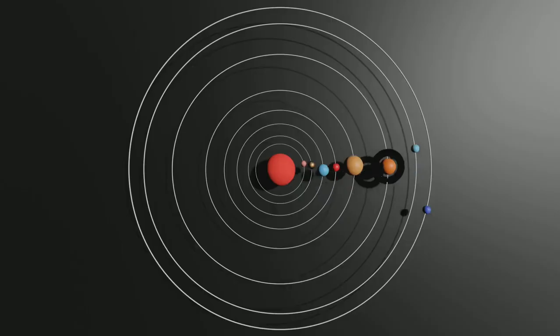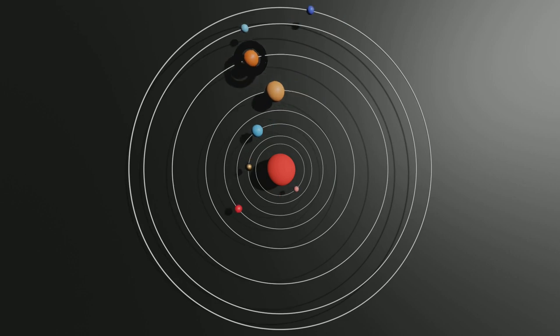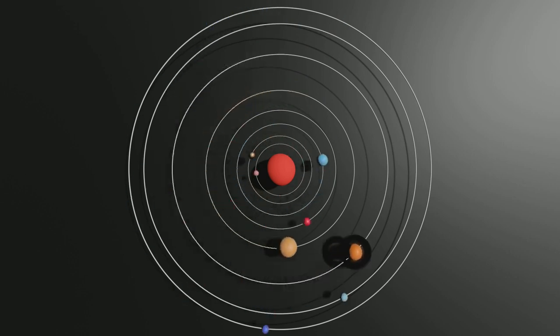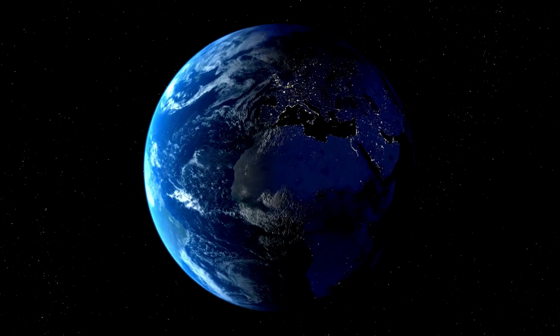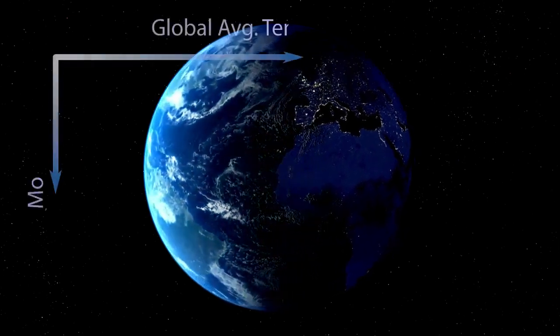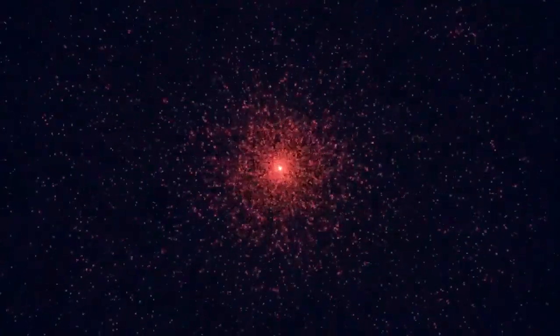This could lead to extreme temperature differences between the two hemispheres. Proxima Centauri is a red dwarf star, smaller and cooler than our sun, and it emits powerful flares that could strip away any atmosphere Proxima b might have.